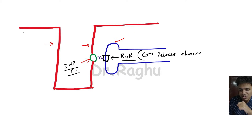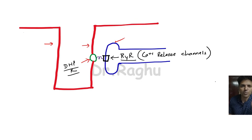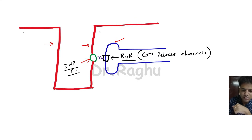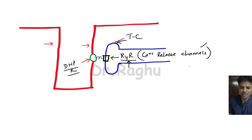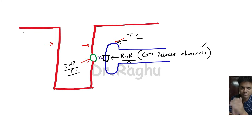The ryanodine receptors are also called calcium release channels. So there is a receptor on the T-tubule — the dihydropyridine receptor — and at the same level on the terminal cistern of the sarcoplasmic reticulum there is the ryanodine receptor, the calcium release channel. One more important point: the dihydropyridine receptor is mechanically connected to the ryanodine receptor.